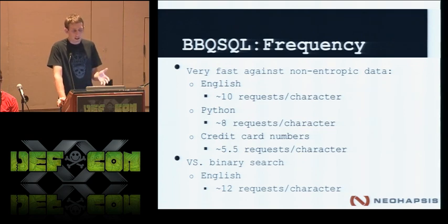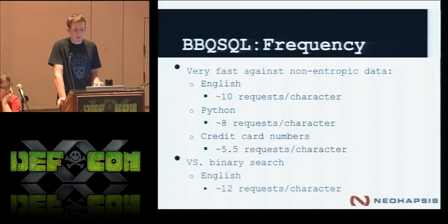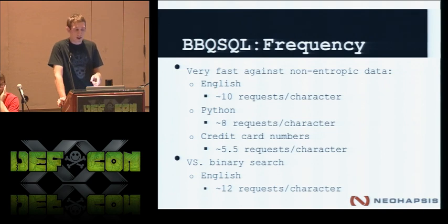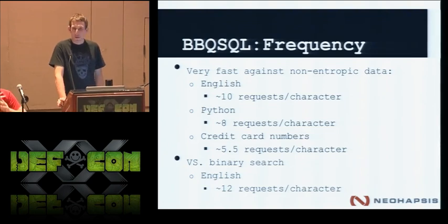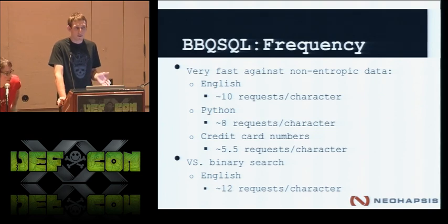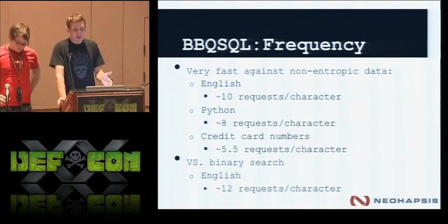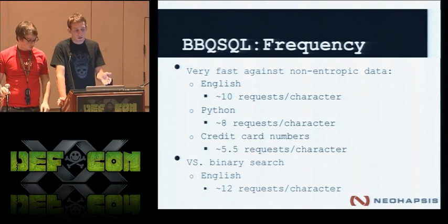With English text I was getting about 10 requests per character. Python code — more structured — showed even better performance at 8 requests per character (I tried dumping the whole Django source code). Credit card numbers got about 5.5, which is interesting because with a normal linear search you'd expect 5 exactly. Compare that to binary search with English at 12 requests per character, so frequency analysis gives a slight improvement for natural language data.